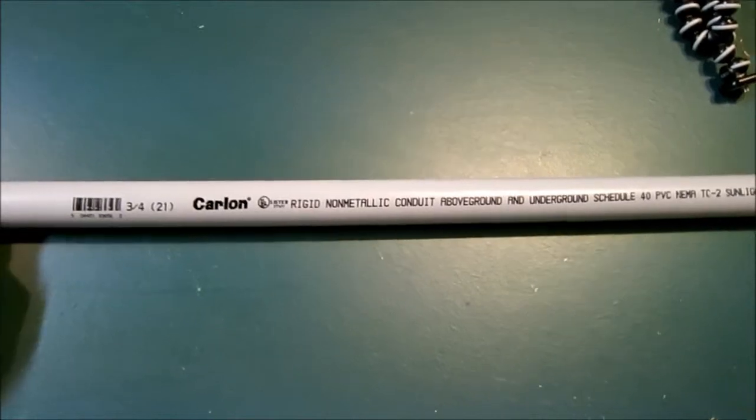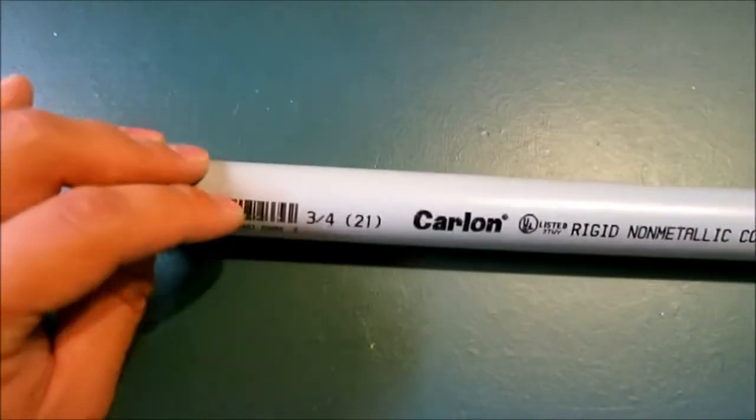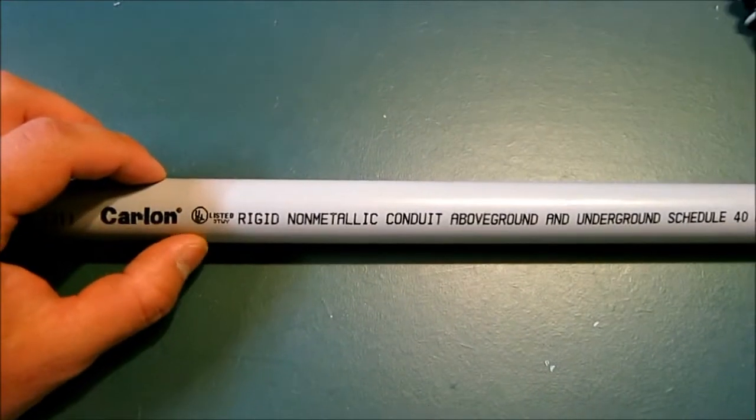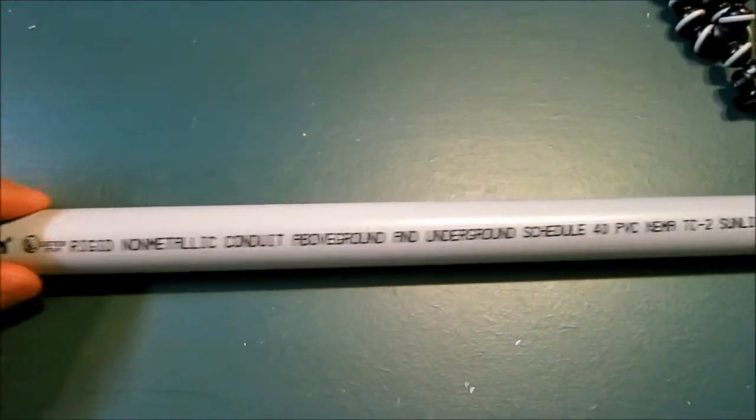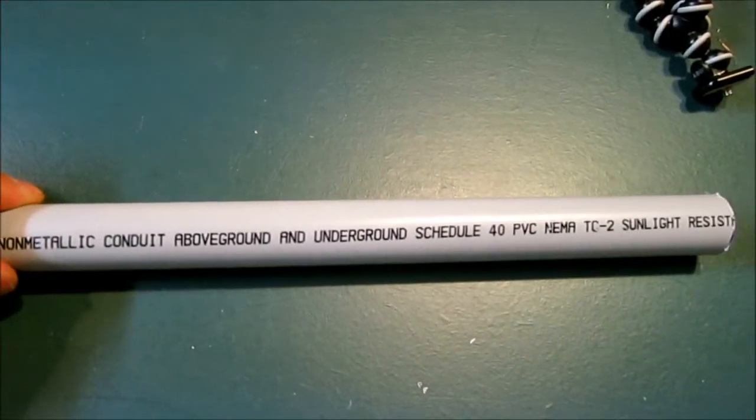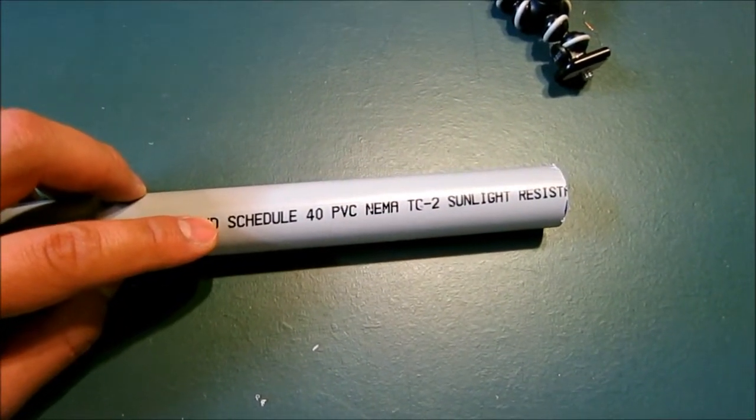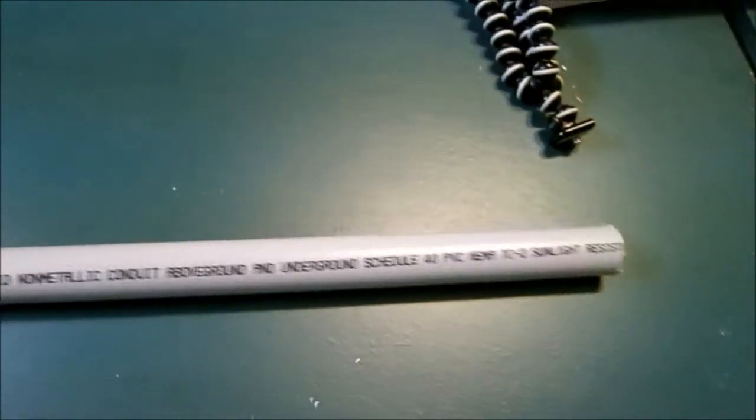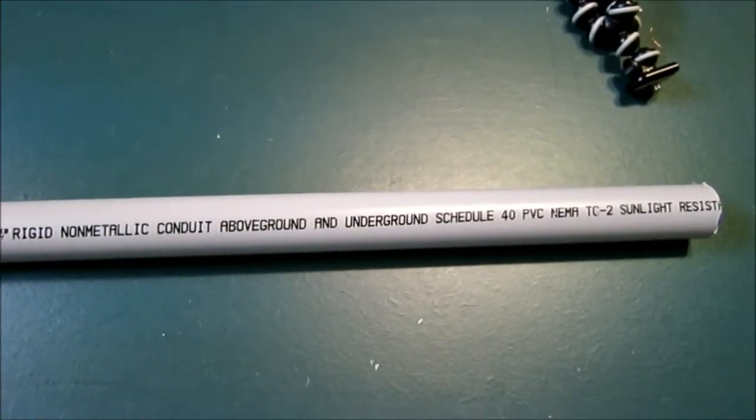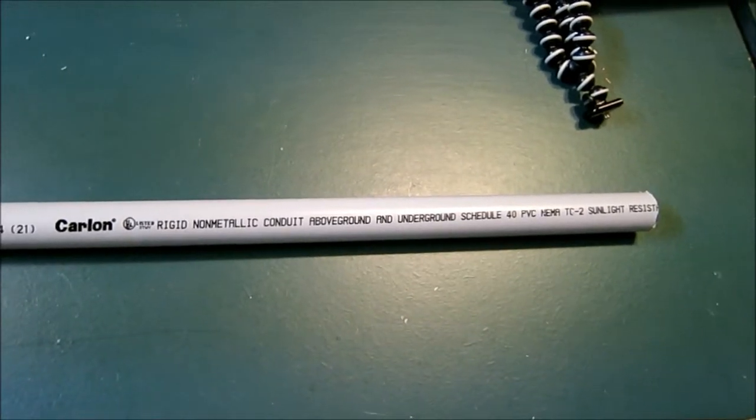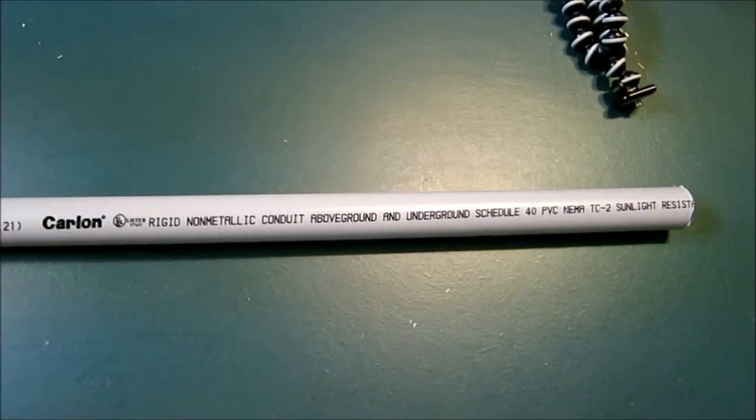So this is what I'm using. I'm using a three-quarter inch PVC pipe. It's a Carlon pipe. It's meant for conduit, you know, threading wire through it. It's scheduled PVC 40 and it's a sunlight resistant version which I know Nick and his channel was talking about sunlight resistant versions. It's all I could find though so I'm going to try to use this and see if it works well. I think it should.